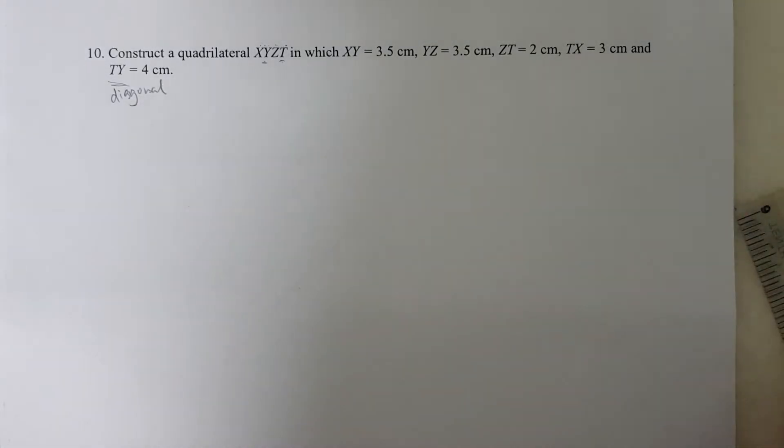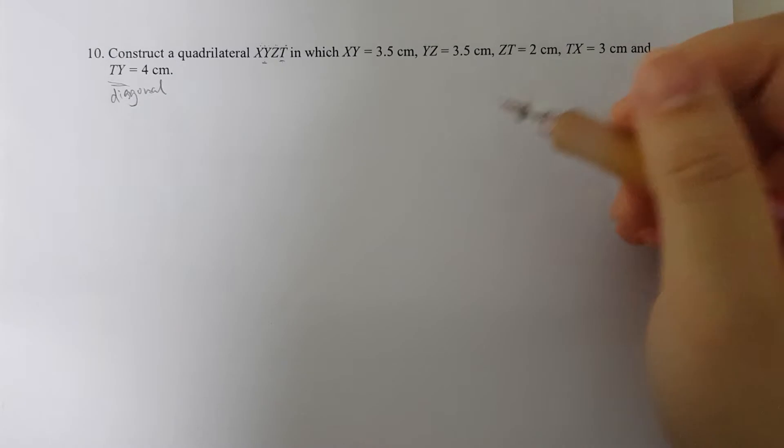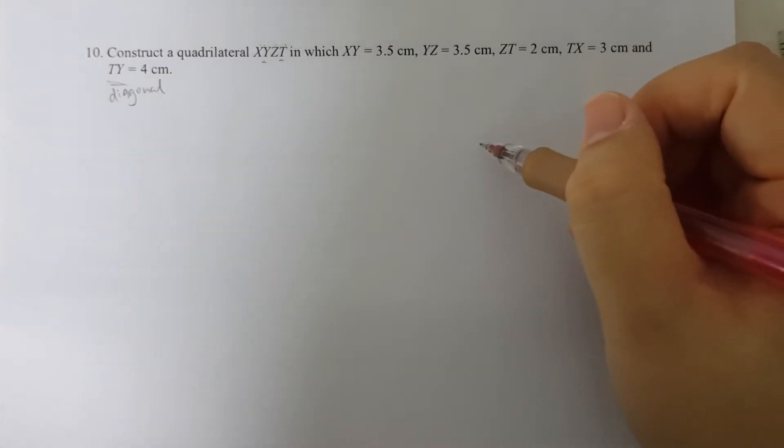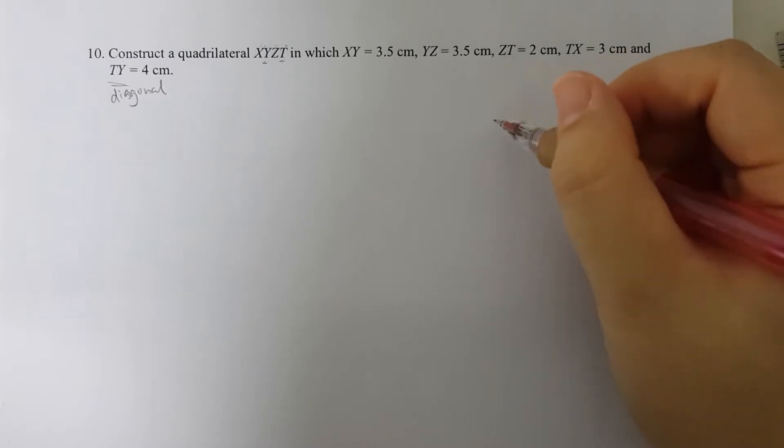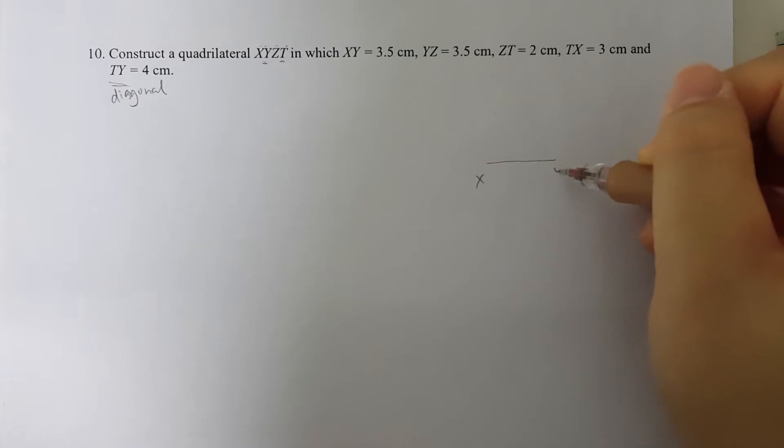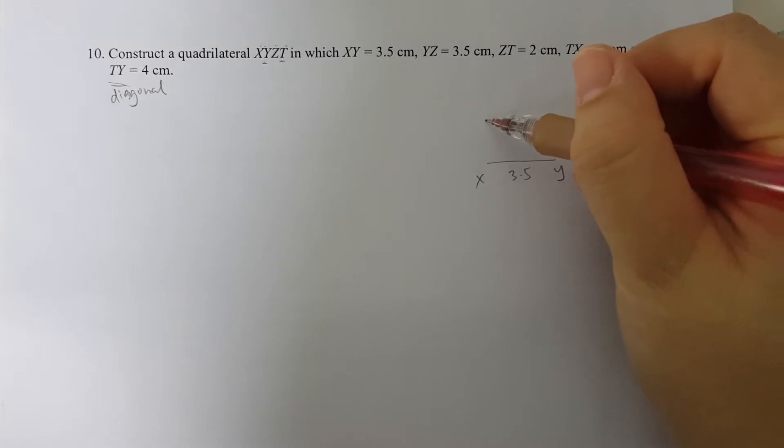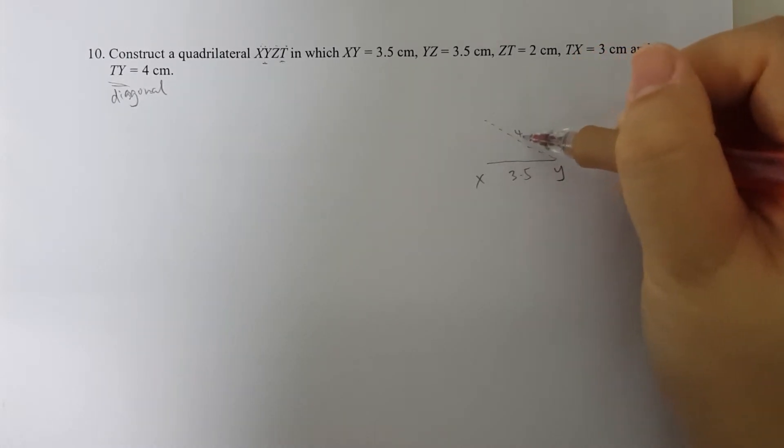I don't know how this quadrilateral will turn out, so I'm just going to do a quick sketch. I'm going to start with TY then. Let's have XY 3.5, TY is this direction. This is 4cm.